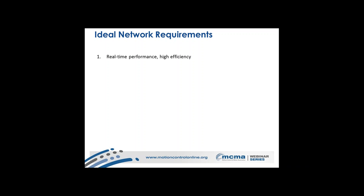The first requirement is real-time performance and high efficiency. You need to have a large asynchronous bandwidth because components today must be upgraded in the field, requiring the ability to download software or firmware upgrades. In addition, imaging components on the network like video or vision cameras also require bandwidth. You'd like to have one network for all automation, handling both slow and fast components simultaneously.